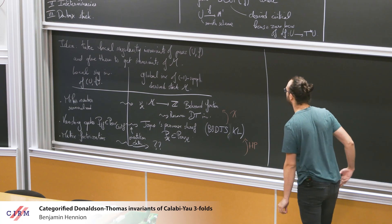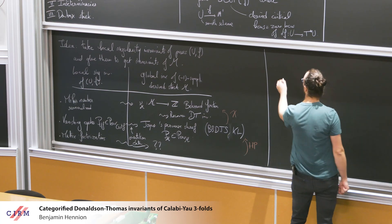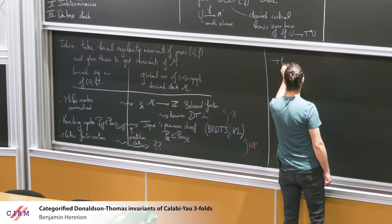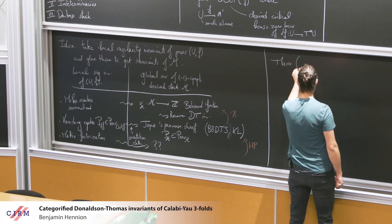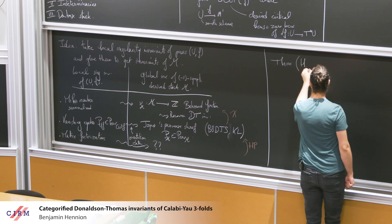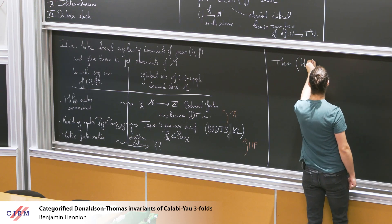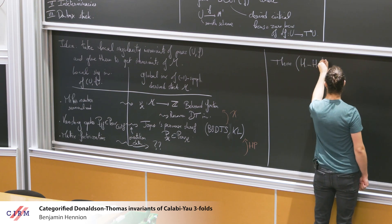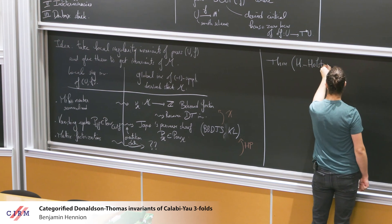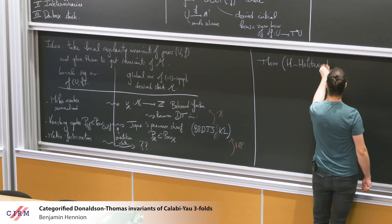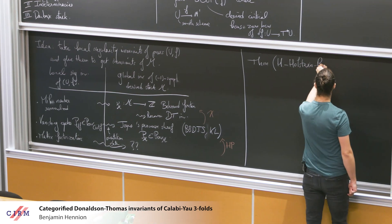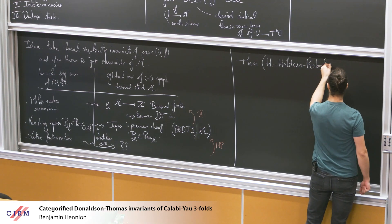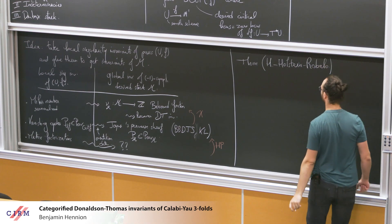What we want to do is actually understand what invariants you can glue and what is the obstruction to gluing any given invariant you can think of. You could add things to the list. This leads me to the main theorem — joint with Holstein and Robalo — whose paper is being finalized.